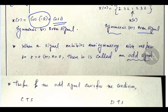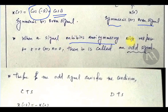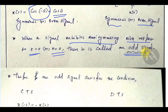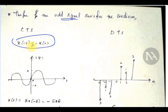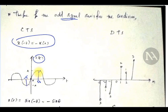Next, we will see anti-symmetry. When a signal exhibits anti-symmetry with respect to t equals 0 for a continuous time signal, or n equals 0 for a discrete time signal, it is called an odd signal. The condition for anti-symmetry or odd signal for a continuous time signal is: x of minus t should be equal to minus of x of t. For example, if x of t at 5 seconds is value a, then x of minus t at minus 5 is minus a. So the magnitude is equal but the sign is opposite — that is anti-symmetry.